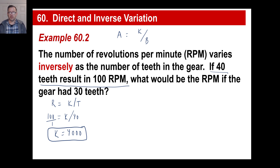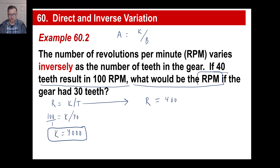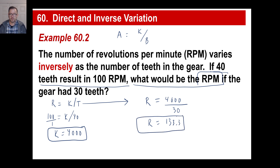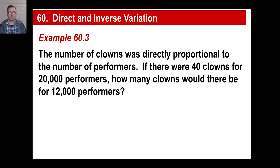The constant K is 4,000. Now the question asks: what would the RPM be if the gear had 30 teeth? R equals 4,000 divided by 30, which gives 133.3. So with fewer teeth the RPM is actually greater than before — that's your basic inverse variation problem.